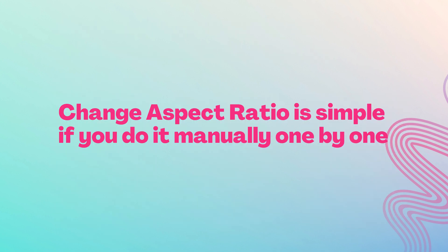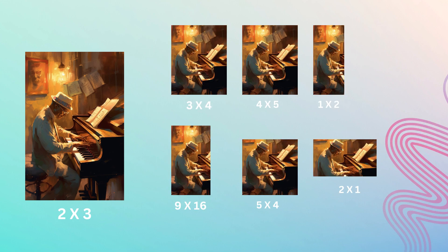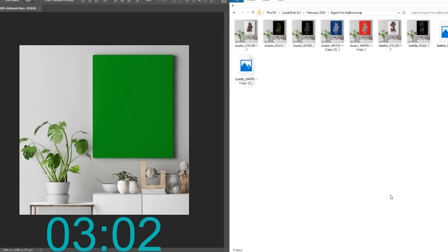Changing the aspect ratio of your artwork file is pretty straightforward if you do it manually one by one. However, it will take you ages if you have like 100 or maybe 200 artworks to work with. Stay tuned because today I'll teach you how you can take an artwork file in one aspect ratio, say 2:3, and transform it into multiple aspect ratios all in one go. At the end of the video, there's a small bonus for you that you'll definitely love, so keep watching till the end.